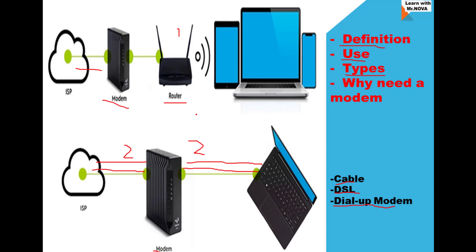To recap: a modem is simply a box that connects your home network to the wider internet. The use of a modem is to modulate and demodulate — modulate means converting analog signals into digital signals, and demodulate means converting digital signals back into analog signals. The three types of modems are the cable modem, the DSL (Digital Subscriber Line) modem, and the dial-up modem. In future videos I will clearly explain how each of these modem types functions.